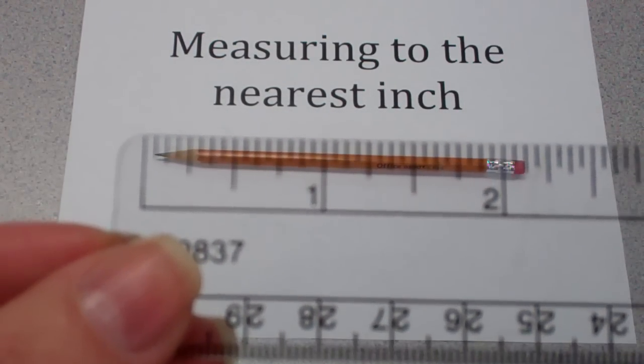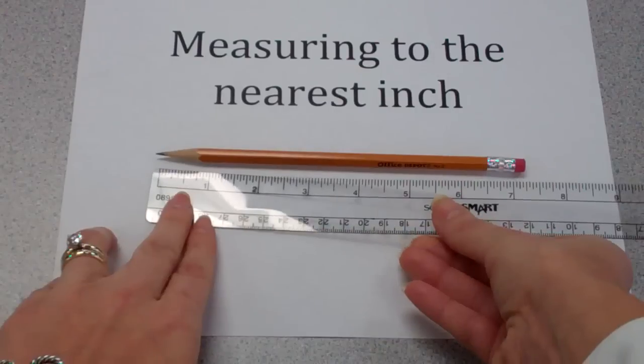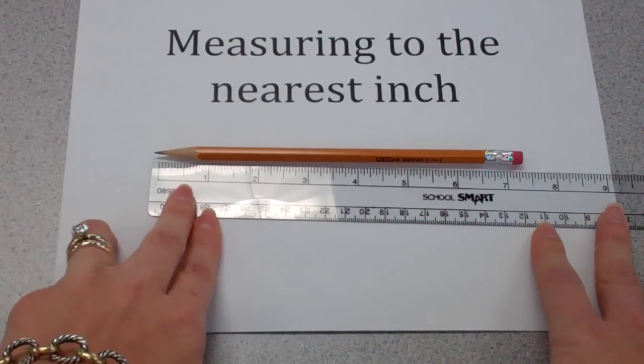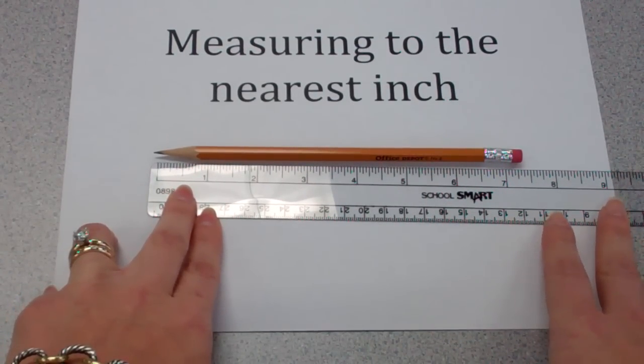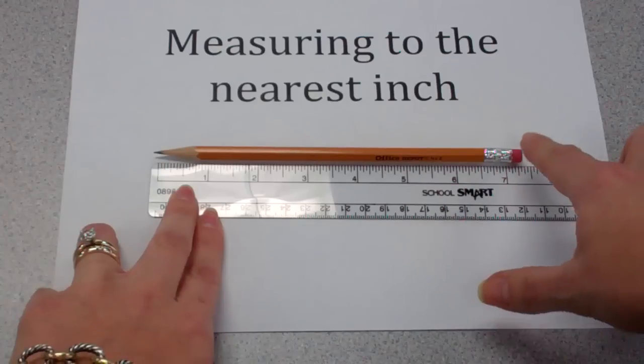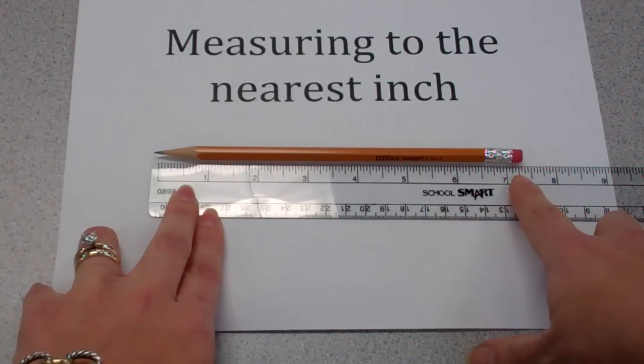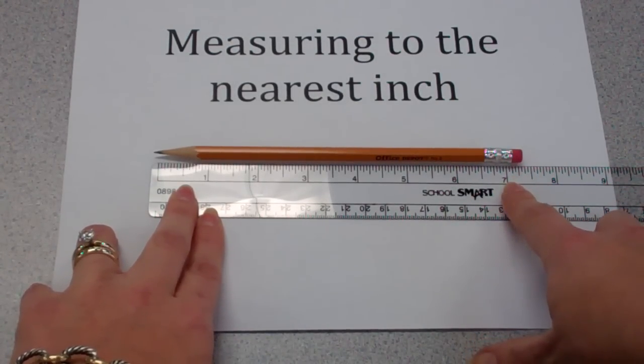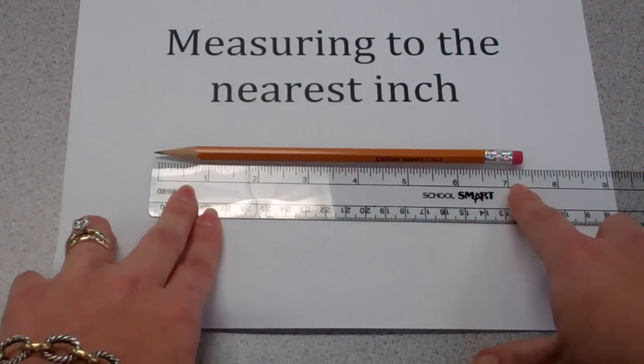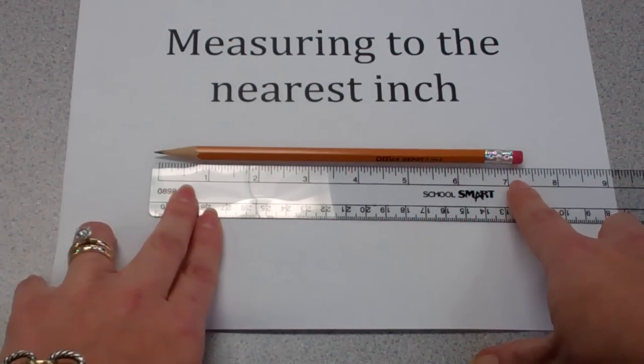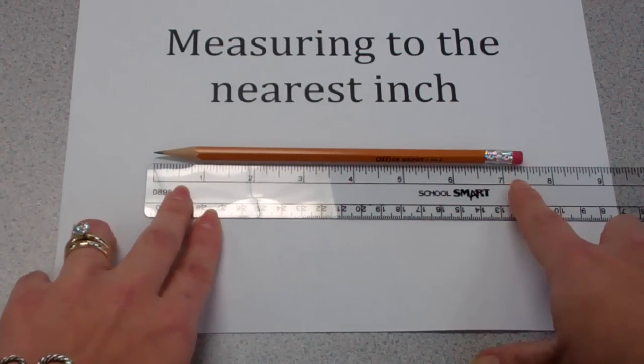The way I want to begin is by lining up the tip of my pencil with that first hash mark of the ruler, and then I'm going to make note of where the eraser ends. I see that the eraser is ending very close to the seven on my ruler. So we would say that this pencil is about seven inches if I were measuring to the nearest inch.